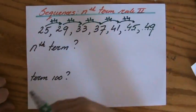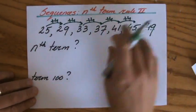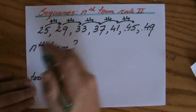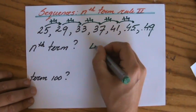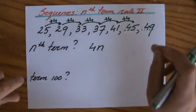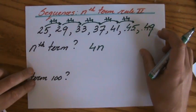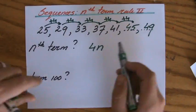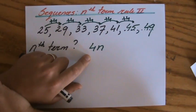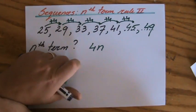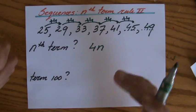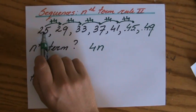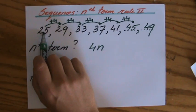You need to determine the term-to-term rule to find the nth term rule. Because the term-to-term rule is plus 4, I write down immediately 4n. As I showed you in my previous video, if the term-to-term rule were plus 6, I would write down 6n. That's my start, but I'm not finished yet. Because is my first term 4? No, it's 25.